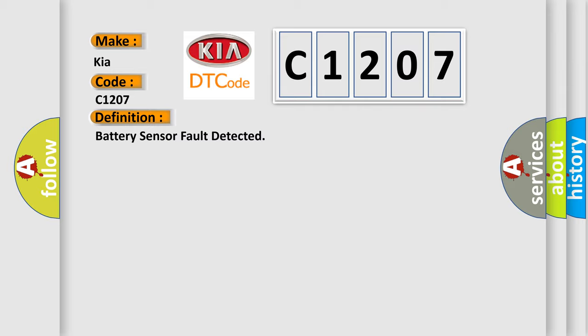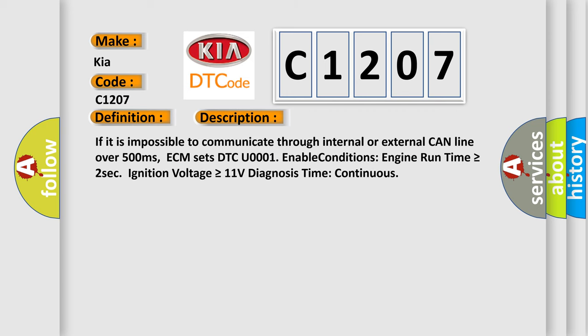And now this is a short description of this DTC code. If it is impossible to communicate through internal or external CAN line over 500 milliseconds, ECM sets DTC U0001. Enable conditions: engine run time is greater than or equal to 2 seconds, ignition voltage is greater than or equal to 11 volts. Diagnosis time continuous.